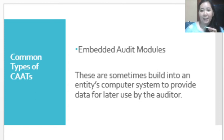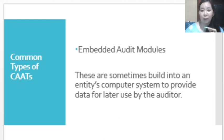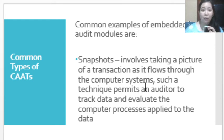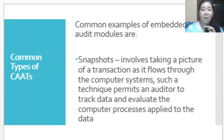The next type of CAAT is embedded audit modules. These are sometimes built into the entity's computer system, with the purpose of providing data for later use by the auditor. One example is snapshots, which involves taking a picture of the transaction as it flows through the computer system. This technique permits the auditor to track the data and evaluate the computer processes applied to it.